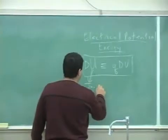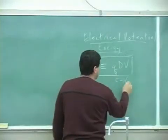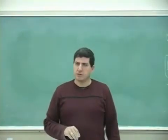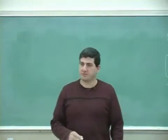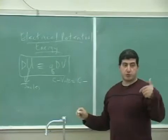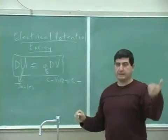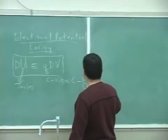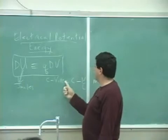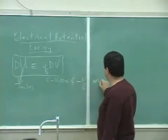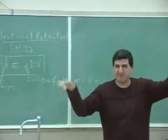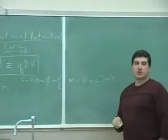Coulombs times volts should give you joules. Volts was originally defined as electric field times dr, which is Newtons per Coulomb times meters. So Coulombs times Newtons per Coulomb times meters — the Coulombs cancel, leaving Newton·meters, which is the definition of a joule. It all checks out.